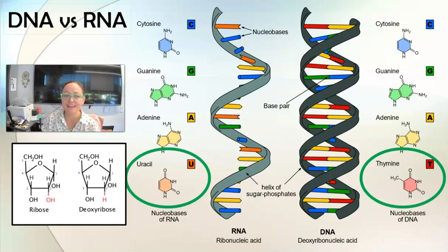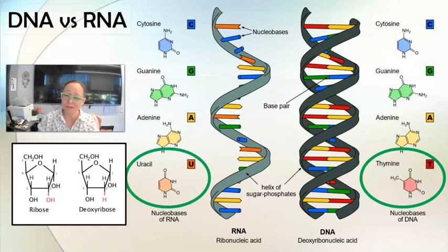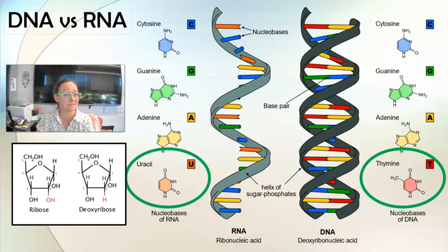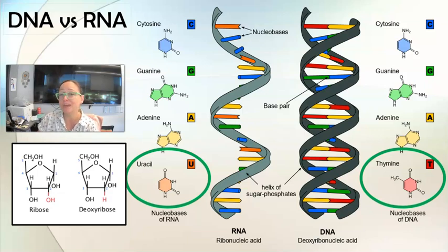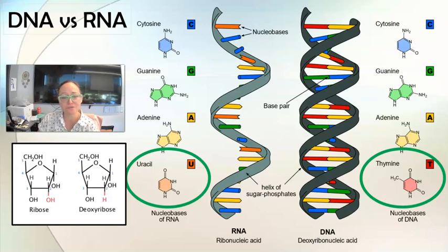They both are made in the nucleus. DNA replication happens in the nucleus of eukaryotic cells, and RNA is a copy of DNA, so therefore it is also made in the nucleus.